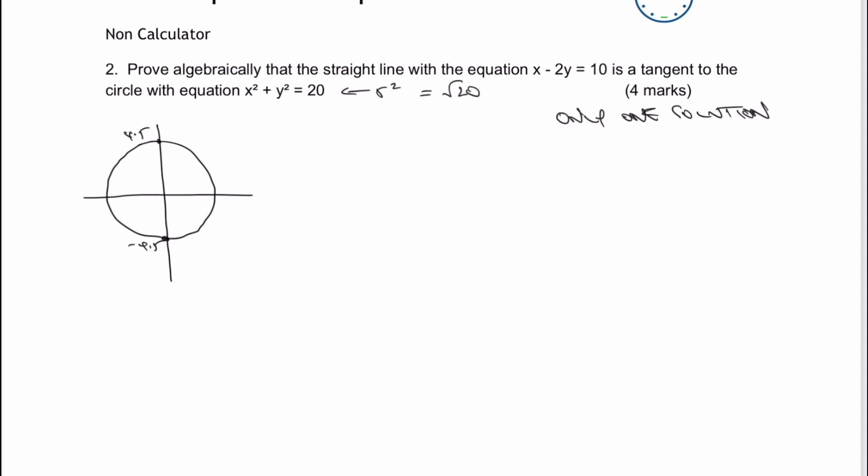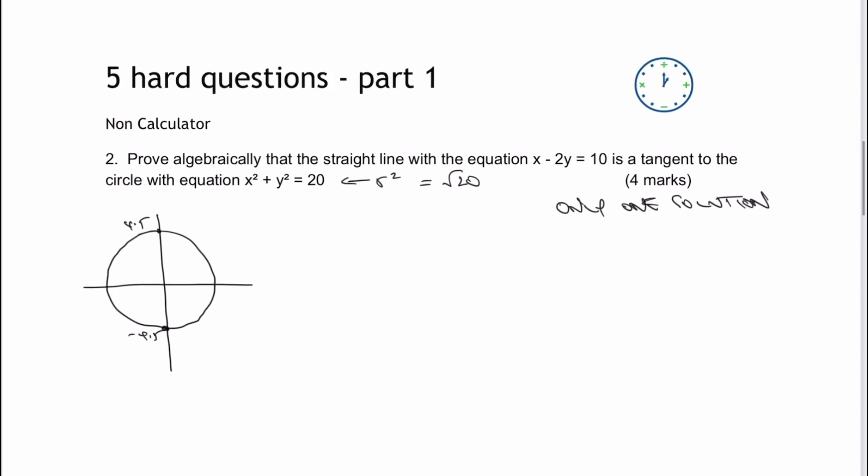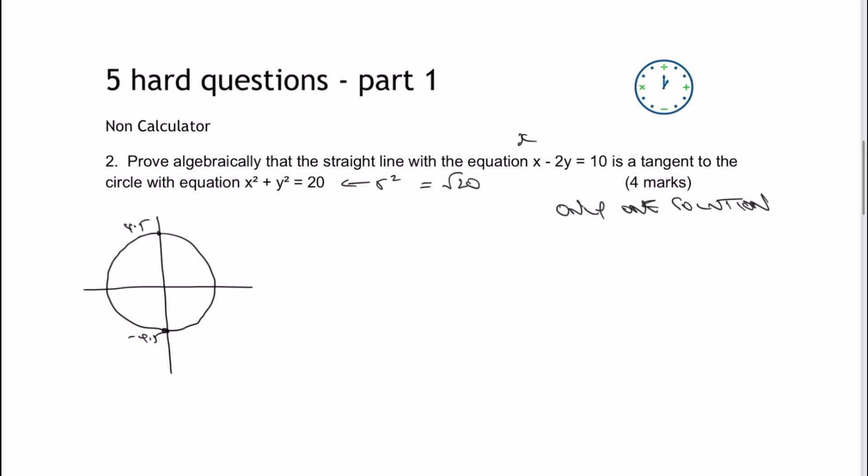So the straight line, there's two things I want to do with that straight line. The first thing I want to do is say, well actually, the value of x on its own, because the way to solve this is to substitute for x, is going to be x equals, and I'm going to write it as 2y plus 10. So that's one thing I can do with that straight line.